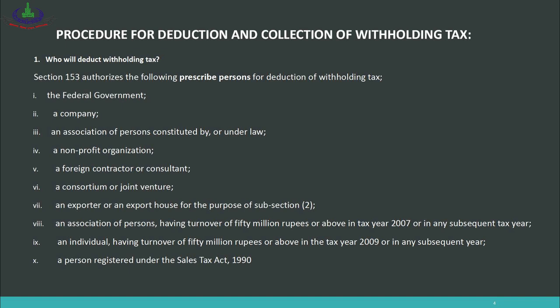Further authorized withholding agents include: an association of persons having turnover of 50 million rupees or above in tax year 2007 or any subsequent year — meaning a partnership firm with annual sales of 50 million or more. Also, an individual having turnover of 50 million rupees or above in tax year 2009 or any subsequent year. And a person registered under the Sales Tax Act 1990 — if you are registered under the Sales Tax Act, it is mandatory for you to deduct withholding tax on all payments.